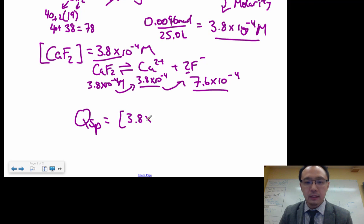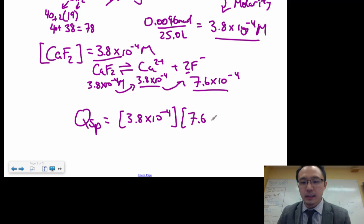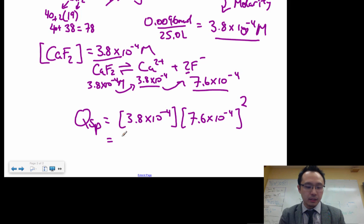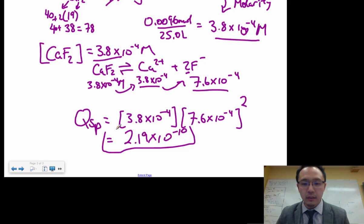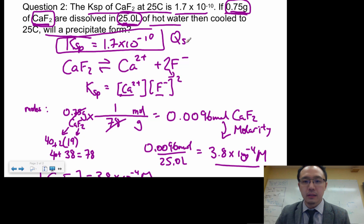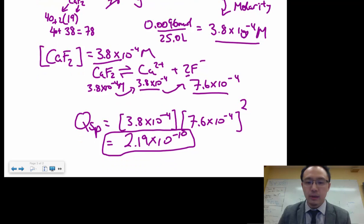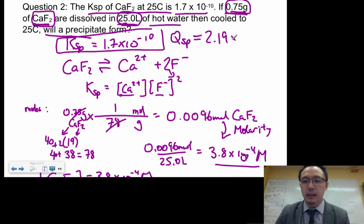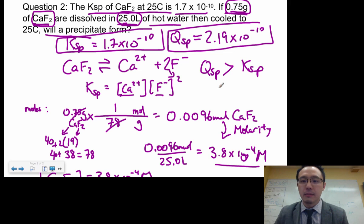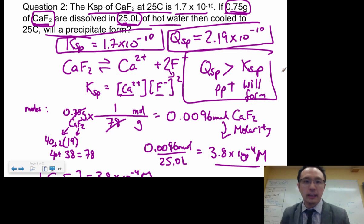QSP = [Ca²⁺][F⁻]² = (3.8 × 10⁻⁴) × (7.6 × 10⁻⁴)² = 2.19 × 10⁻¹⁰. Compare this QSP to the given KSP value — QSP is greater than KSP, which means a precipitate will form. That's how you do these predicting precipitate questions. Hopefully that has helped — see you next time.